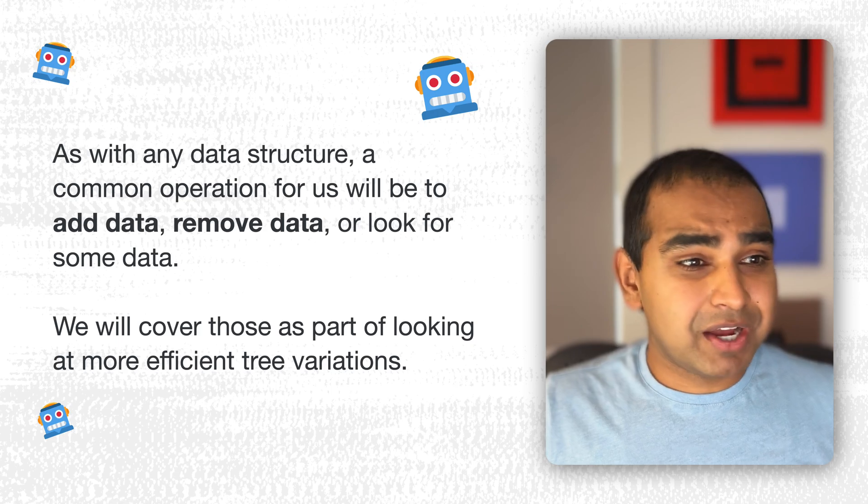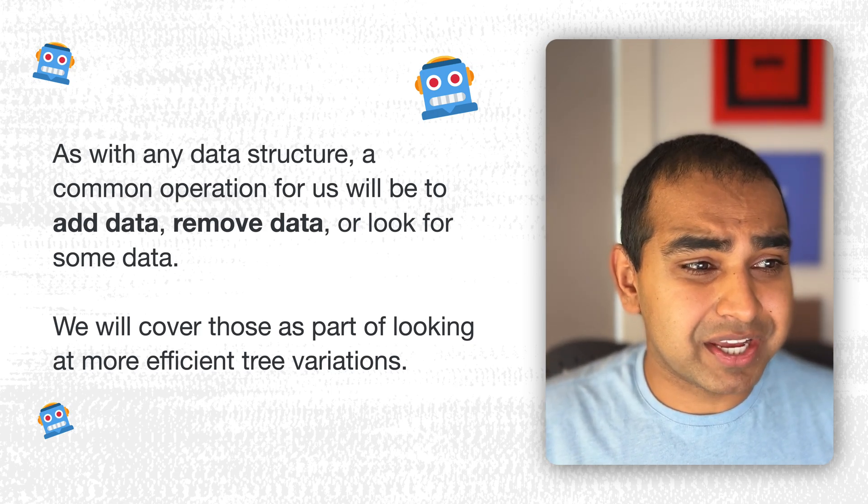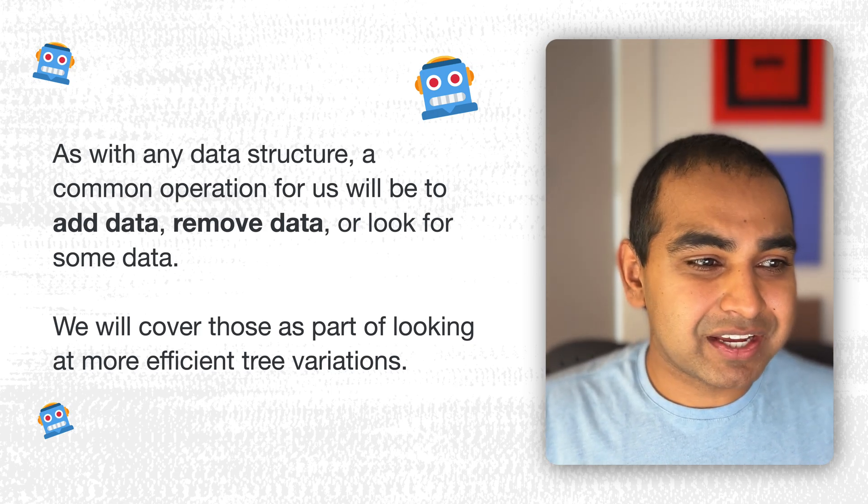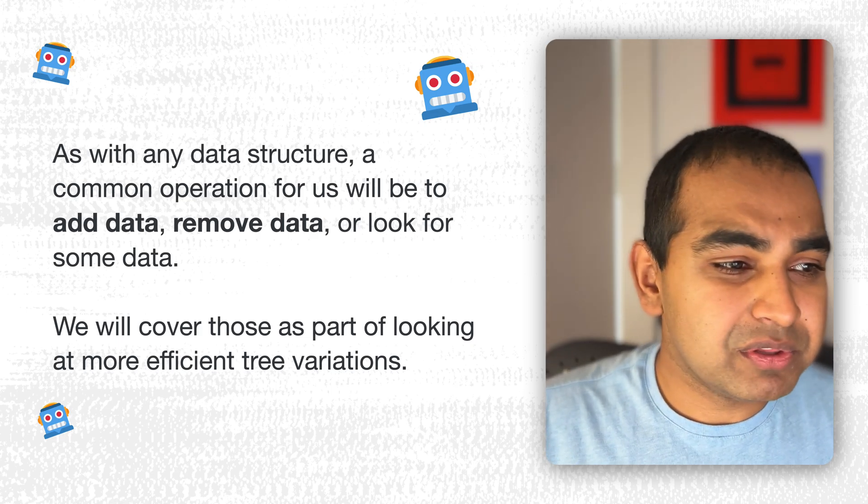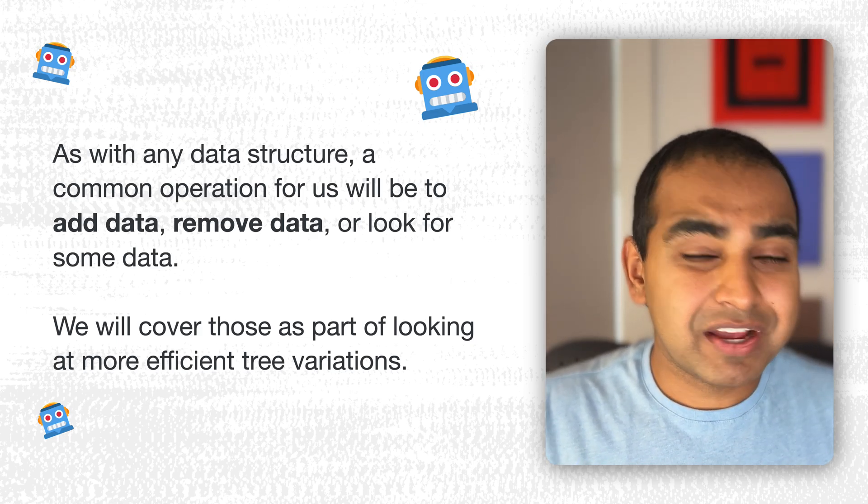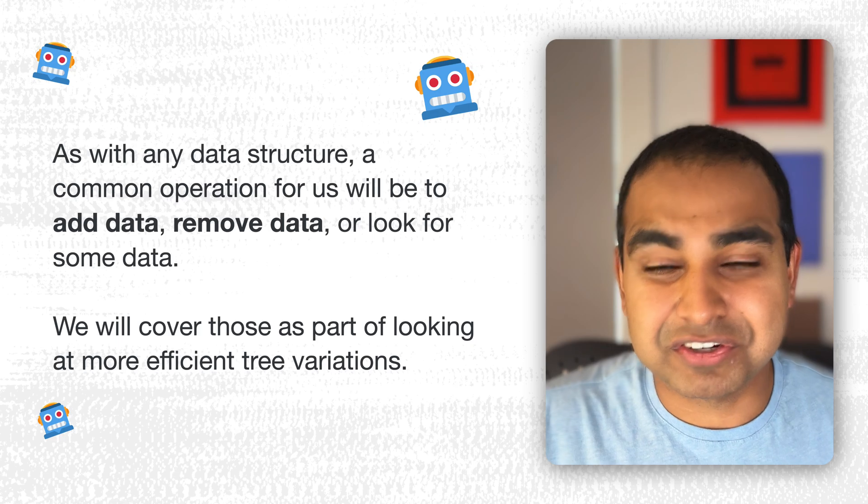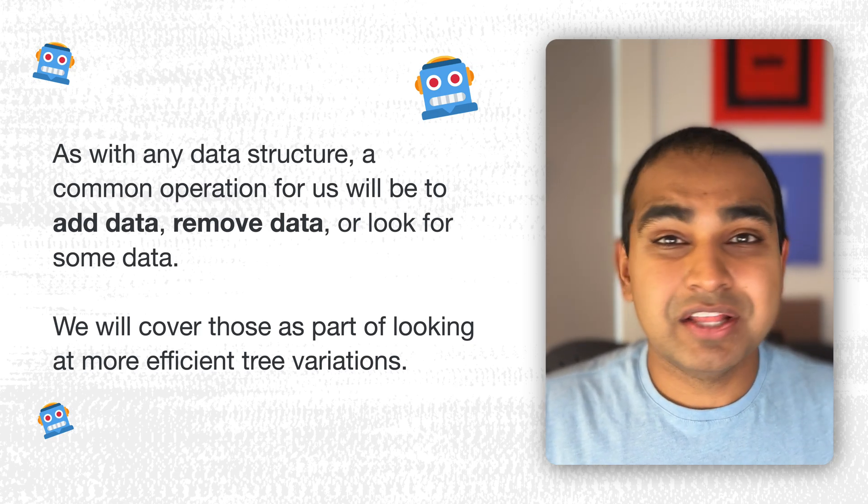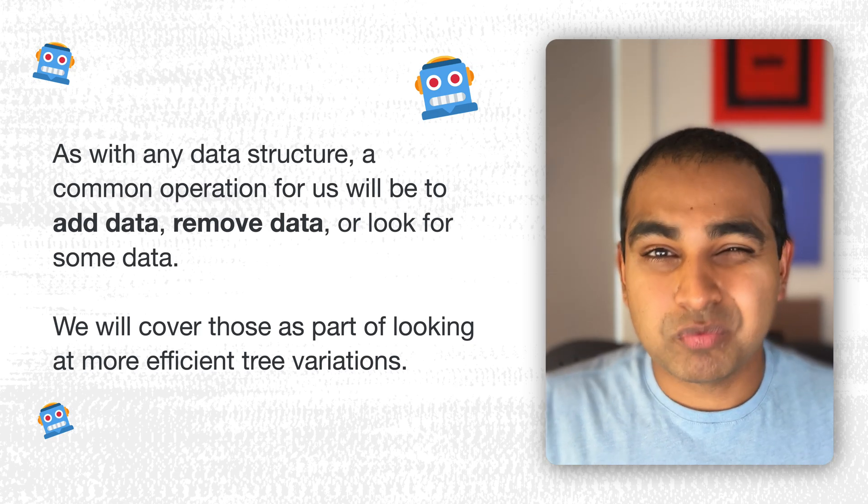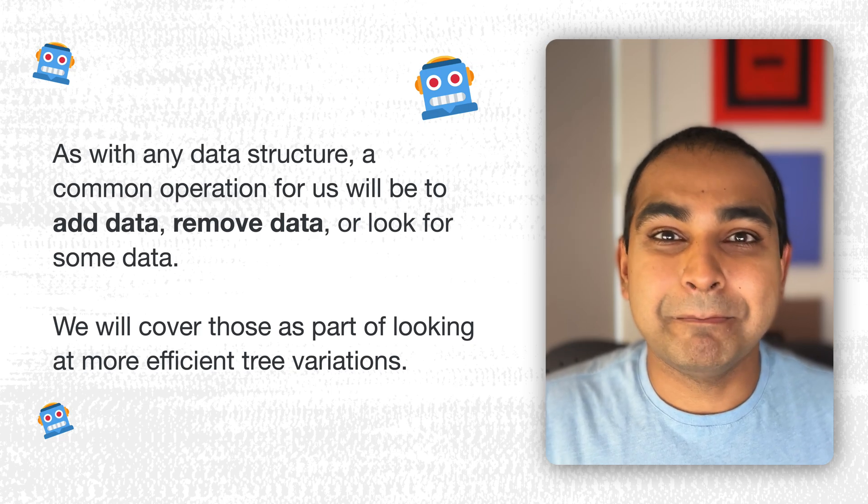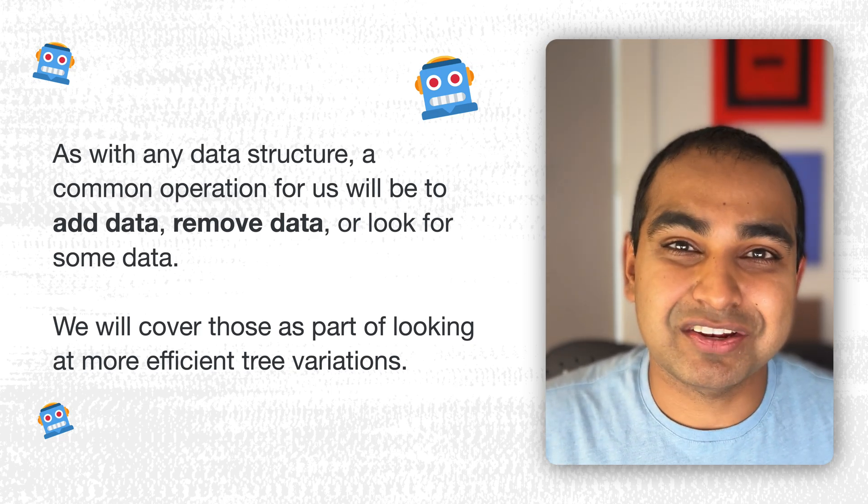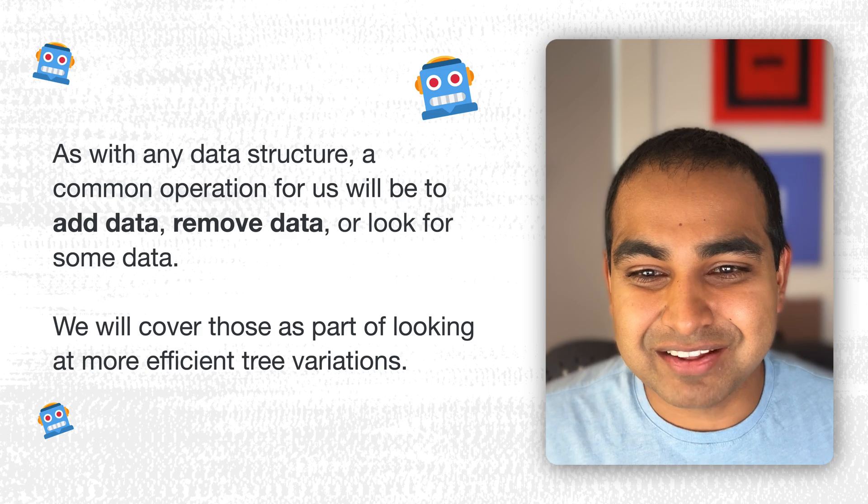Now, as with any data structure, a common operation for us will be to add data, remove data, or look for some data. We will cover those as part of looking at more efficient tree variations. The binary tree is one variation - there are other more specific variations where we actually will spend time looking at how to make data manipulation and representing data in a tree more possible.